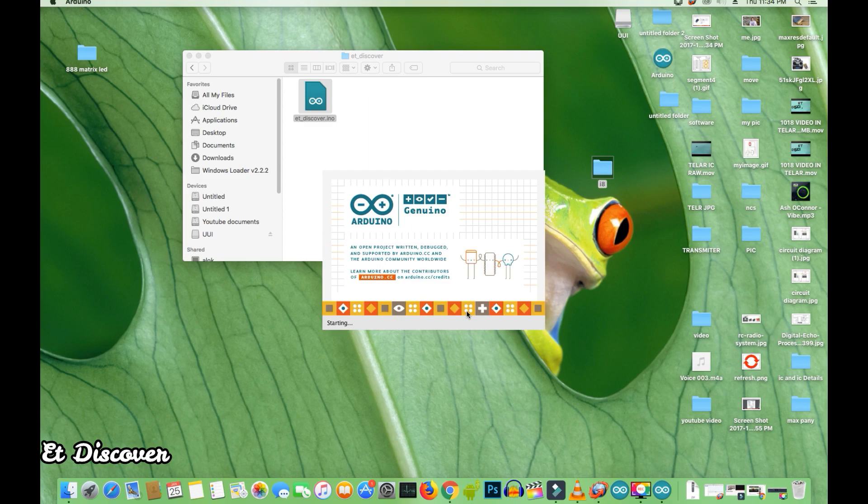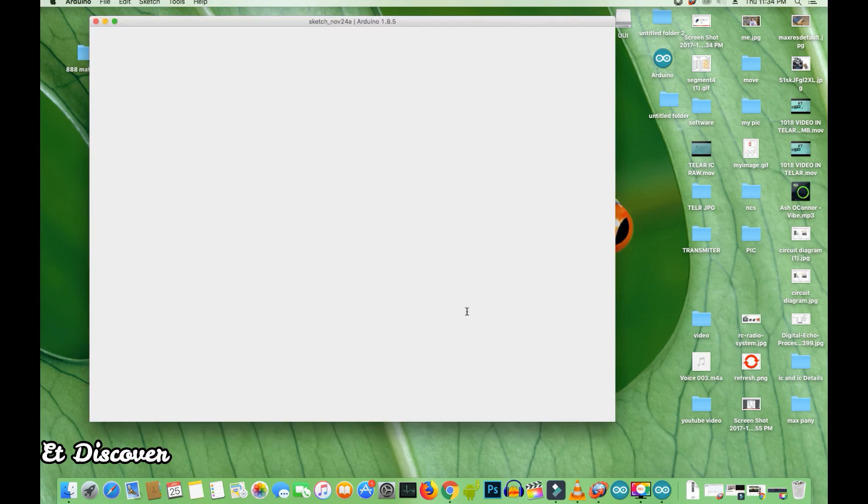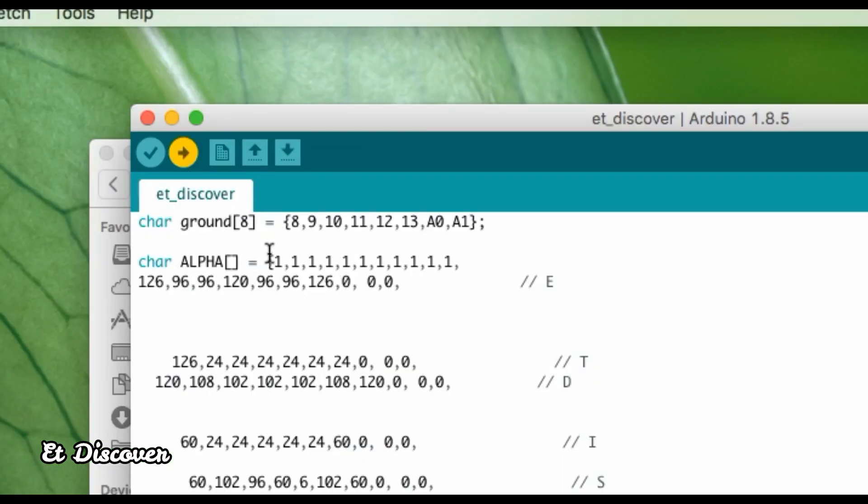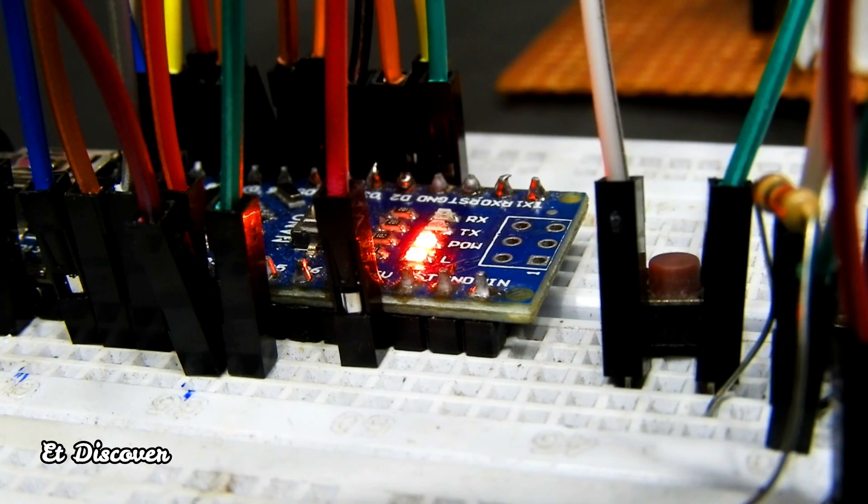And I open the Arduino software. You can see this code. And now I'm going to upload this. You can see the Arduino Nano RX LED blinking like crazy. That means code is being uploaded.